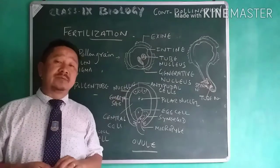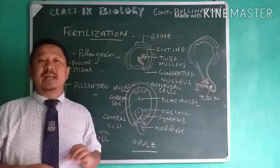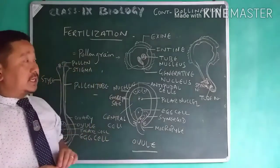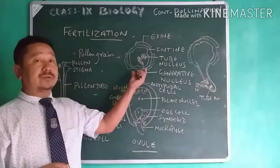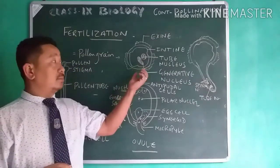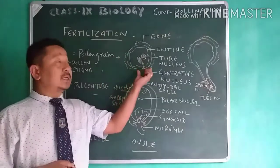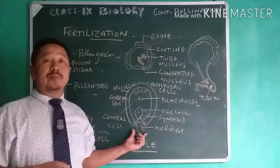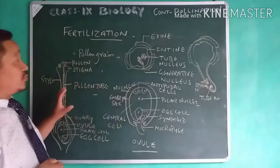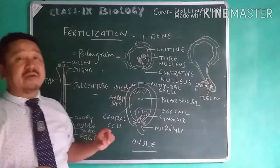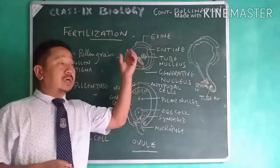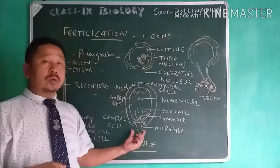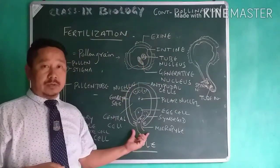Fertilization means the union of male and female gametes. Male gametes are found in the pollen grains and female gametes are found in the ovule. Before going into the process, let us first talk about the structure of pollen grain and ovule.